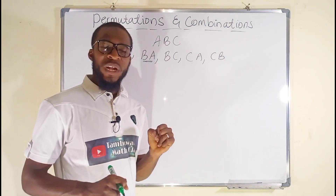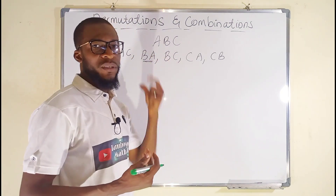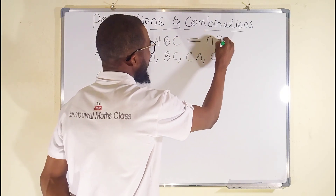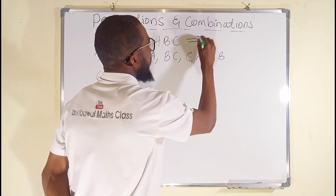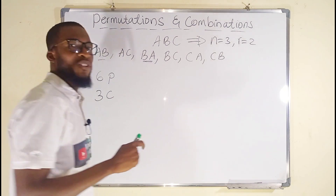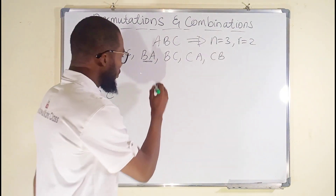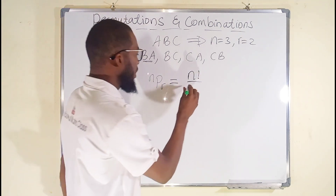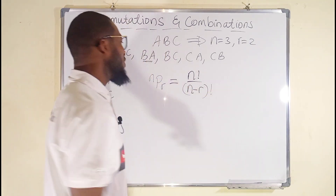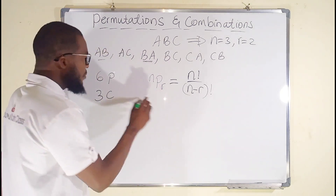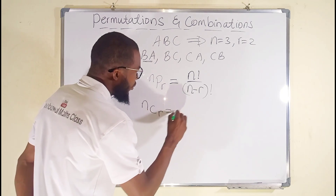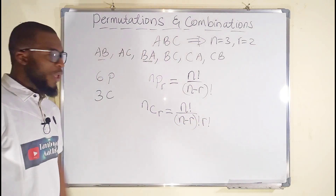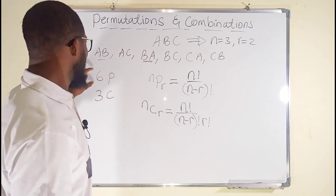This brings us to an important formula that guides us in deciding the number of permutations and combinations. For permutation: nPr = n! / (n−r)!. For combination: nCr = n! / [(n−r)! × r!]. Let us apply these with n = 3 and r = 2, since we are choosing 2 out of 3, to verify we get 6 permutations and 3 combinations respectively.